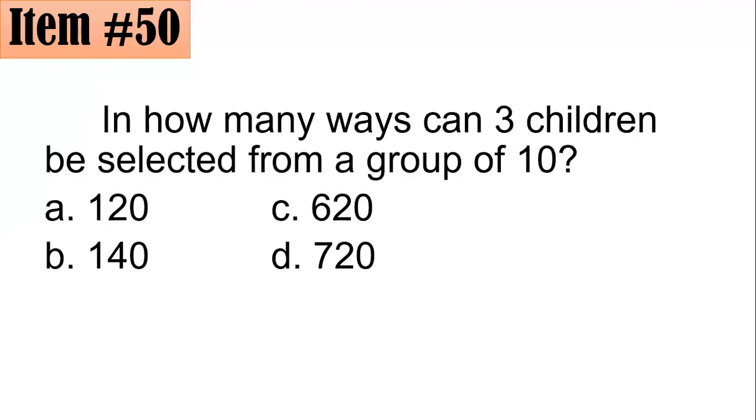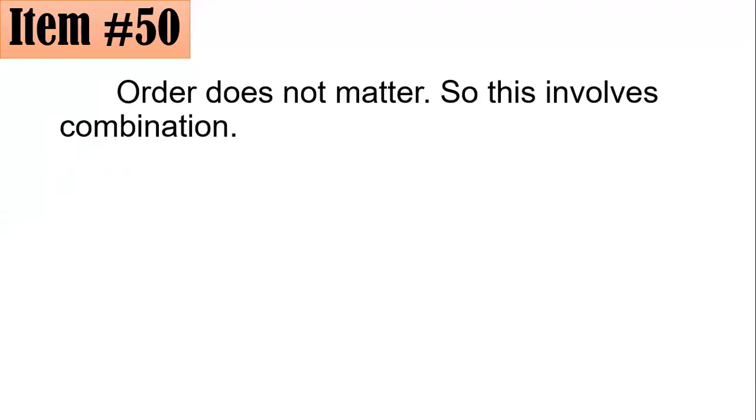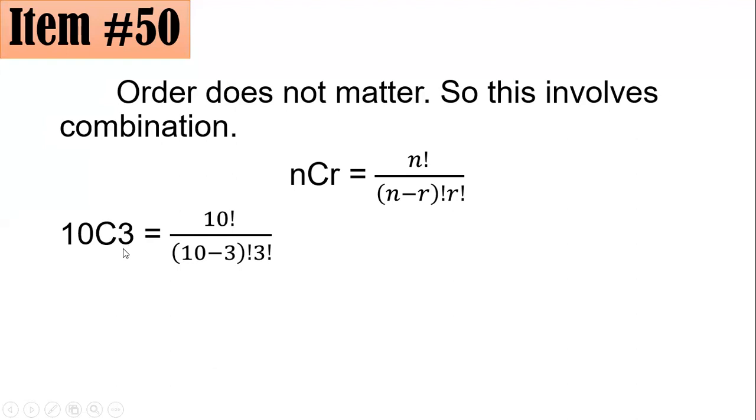In how many ways can 3 children be selected from a group of 10? Is it 120, 140, 620, or 720? We know that in this case, order does not matter as long as the children is within the selected group. So this involves combination problem. And the formula for the combination of N objects taken R at a time is NCR equals N factorial all over N minus R factorial, R factorial. And note that your N here should be greater than or equal to your R. So here we have 10 objects and we are going to get 3 at a time. So by substitution, that's 10 factorial all over 10 minus 3 factorial, 3 factorial.